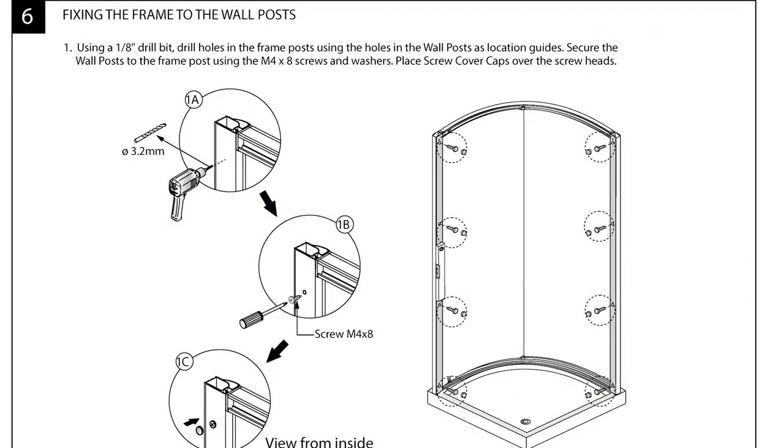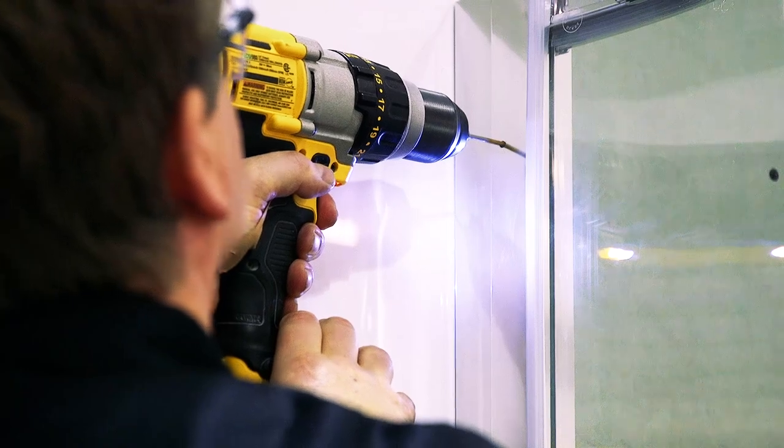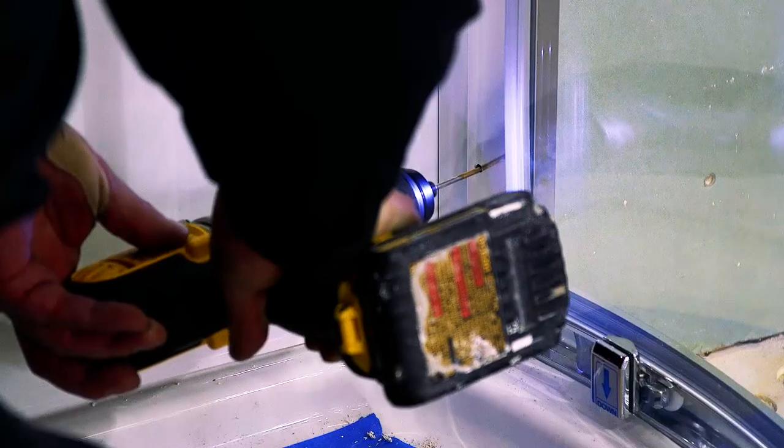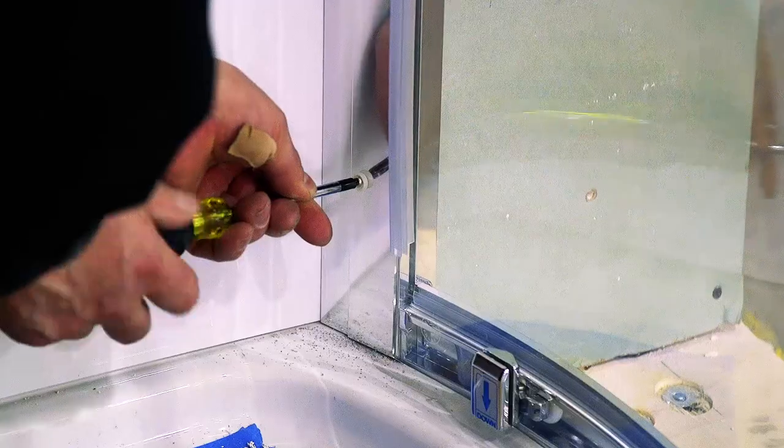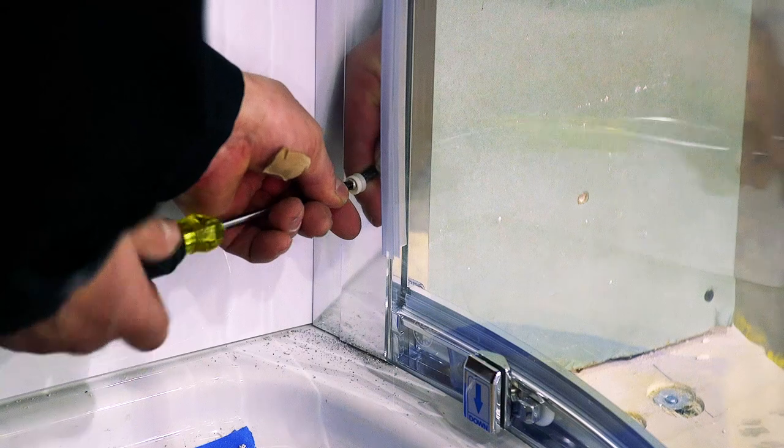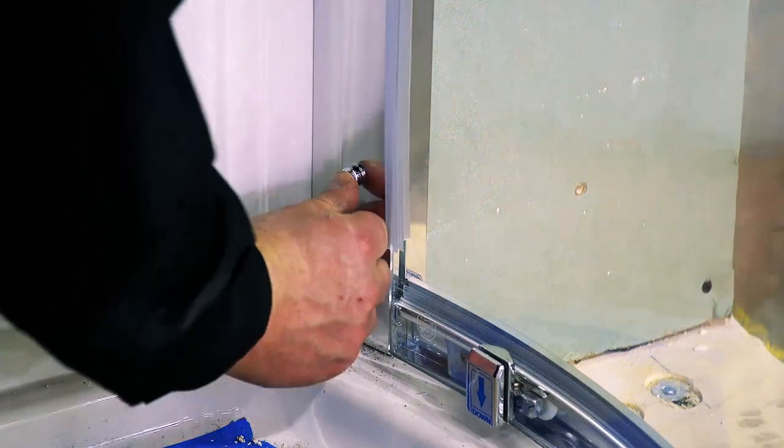Section 6: fixing the frame to the wall posts. Using a one and one-eighth inch drill bit, drill eight holes in the frame posts, using the holes in the wall posts as location guides. Using the M4 by 8 screws and washers, secure the wall posts to the frame post. Then place the screw cover caps over the screw heads.